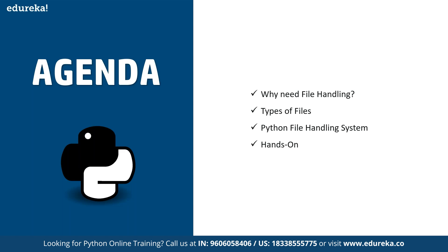Python is one of the most in-demand programming languages of all time. It has been one of the main languages used for data science because it's the easiest language to start with. Python has multiple built-in libraries available so we can use those libraries for accessing multiple classes and projects without having to design functions from scratch. Python is a high-level object-oriented programming language, developed in 1991 by Guido van Rossum, and its syntax is similar to the English language, which enhances code readability.